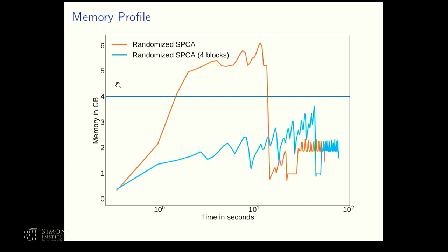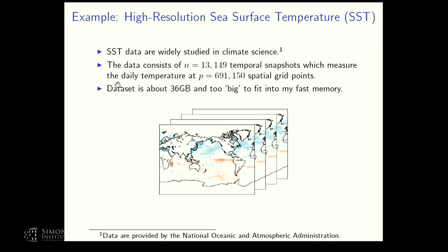The only requirement is efficient row access in the data matrix, which is not a problem if data is stored in a hierarchical data file format. As an example, we use sea surface temperature data at high resolution — daily temperature measurements at about 700,000 spatial grid points over the last 37 years, totaling roughly 36 gigabytes. That's too large to fit in fast memory on a laptop.